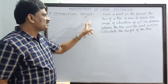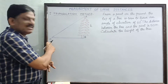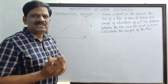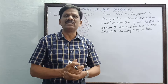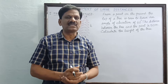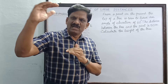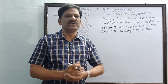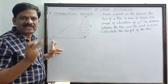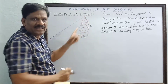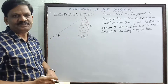Let us consider a tree whose height is h. The tree is represented by the vertical line AB whose height is h. The point of observation is C, so from point C we are observing the top of the tree — the tip of the tree at A. Road-building engineers use an instrument called a sextant or range finder. Using a range finder placed at C, we can measure the angle subtended by the tip A of the tree at point C.